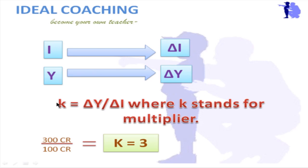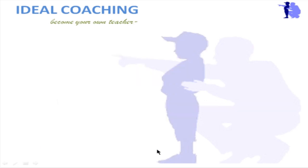So how does the government know what the increment in income will be when they inject money into the market — whether the multiplier is one, two, three, or more times? By using this formula, based on what they have observed earlier, they become confident that the multiplier effect of their economy is about three, four, or five times. Accordingly, they inject the money — suppose they want to increase GDP by 500 crores and the multiplier is 5, they inject 100 crores.